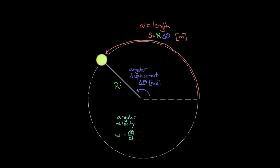To get from angular velocity to regular velocity, we multiply both sides of the omega equation by r. This gives r·omega = r·Δθ / Δt. But r·Δθ is just the arc length, so the right-hand side is meters traveled divided by time, which is speed. So r·omega equals the speed of the object.